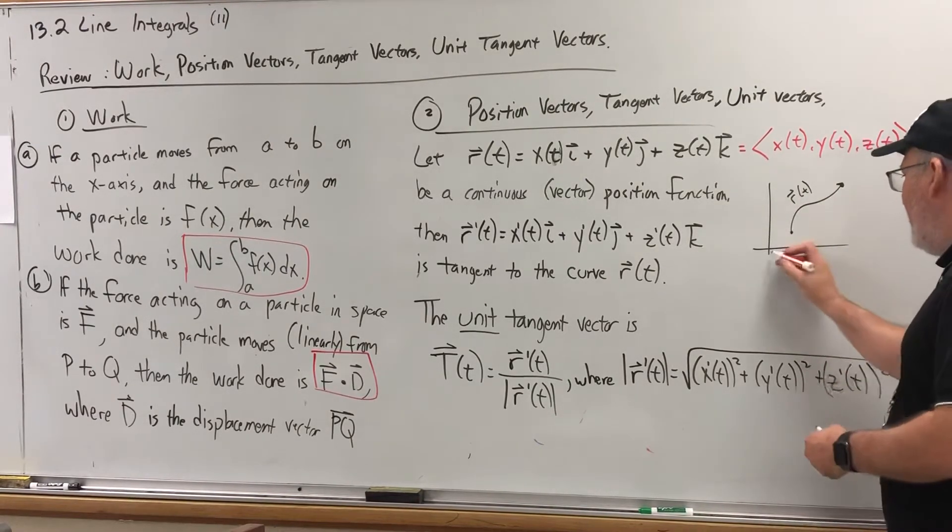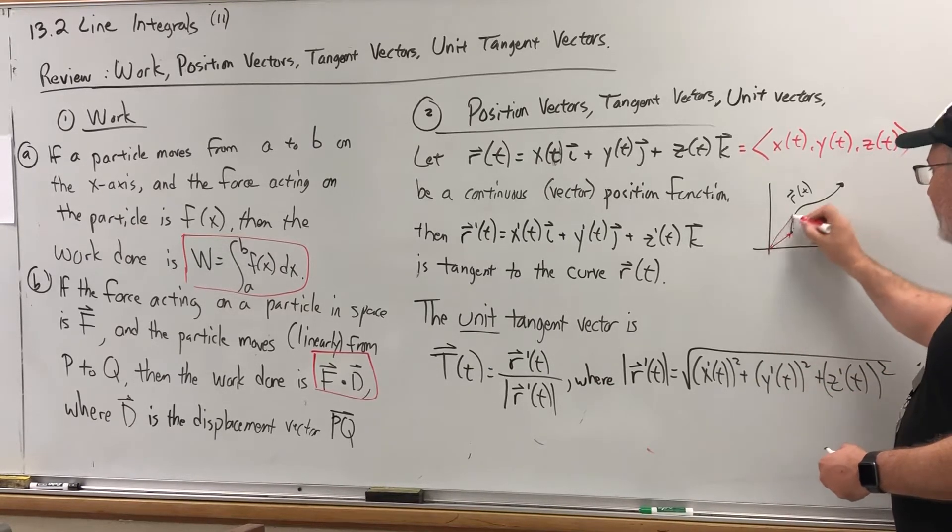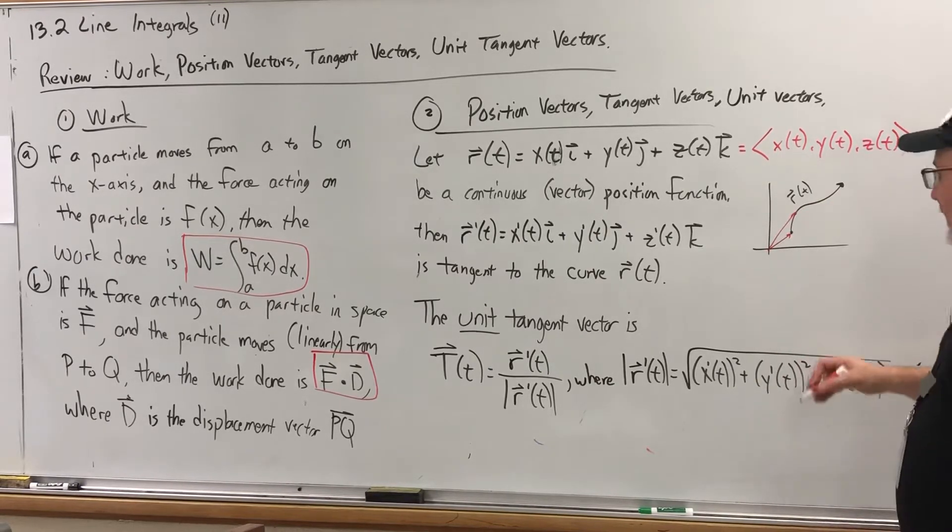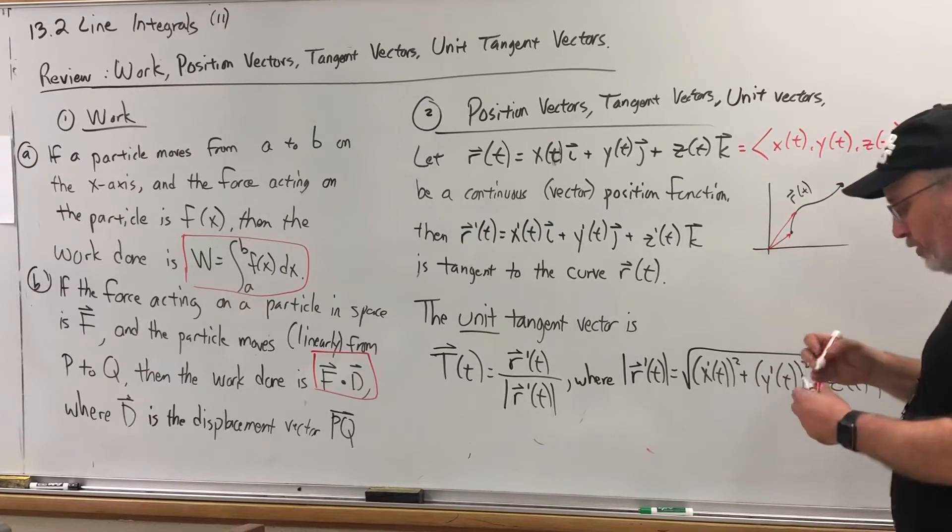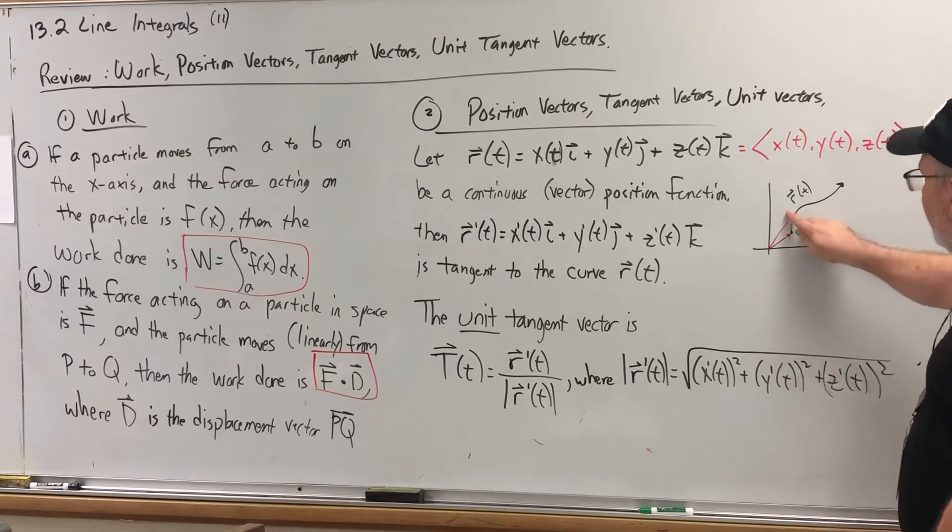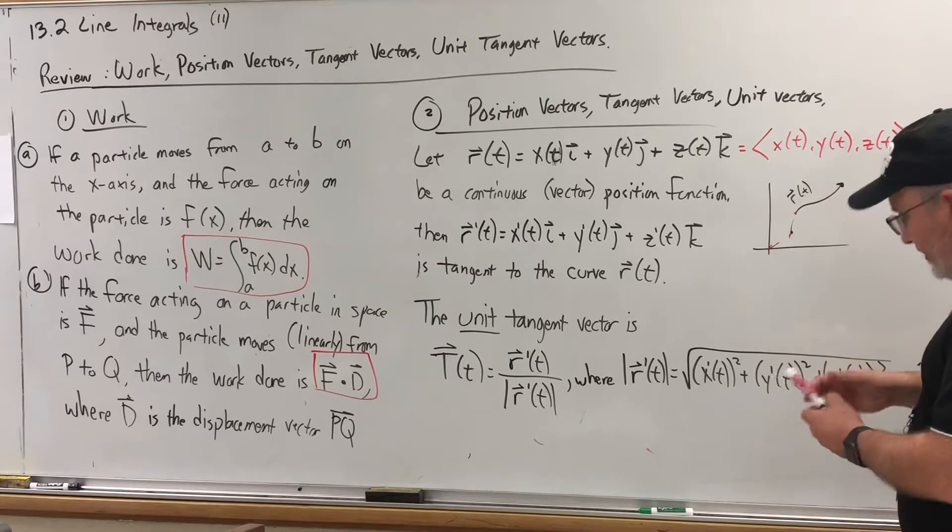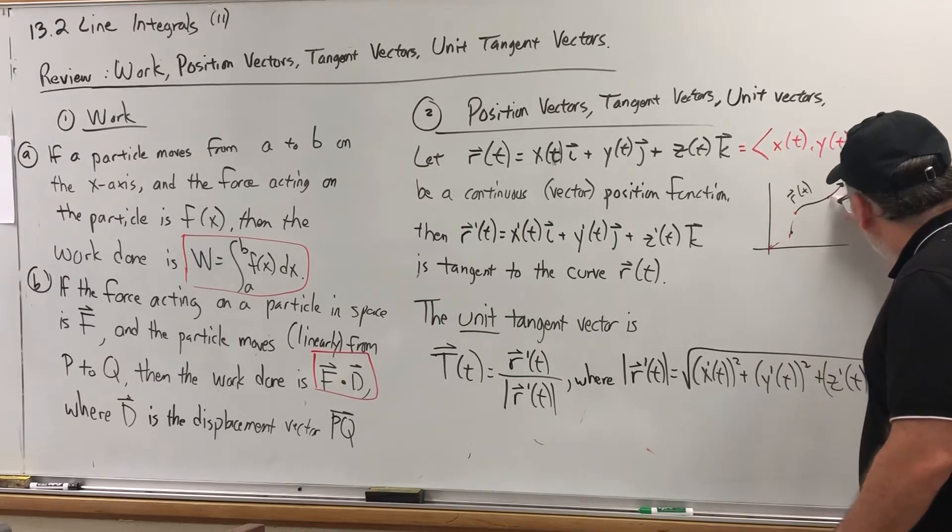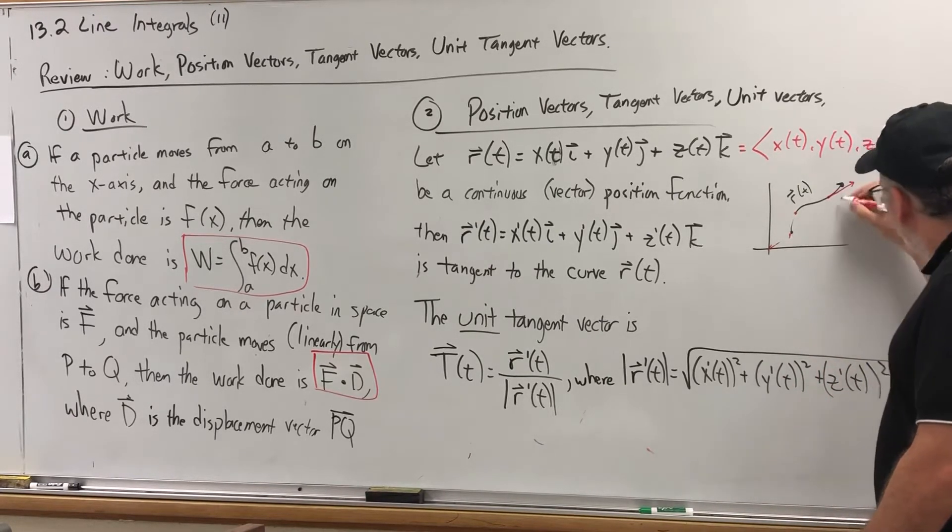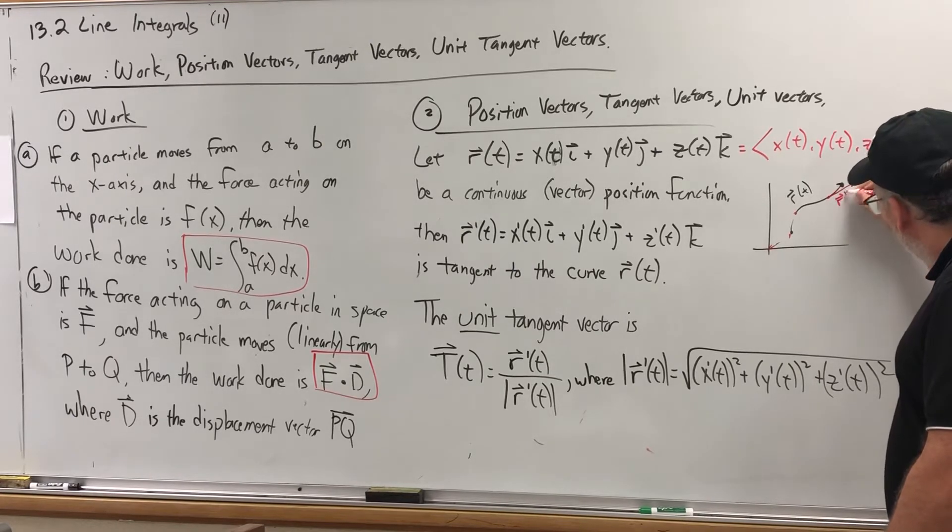Meaning you put in one value, it tells you the end of the first vector. You put in another value, it gives you the end of another vector. And the endpoints, the terminal points of those vectors, form this curve. Then by taking the derivative of this, it will give a tangent vector, R'(t).